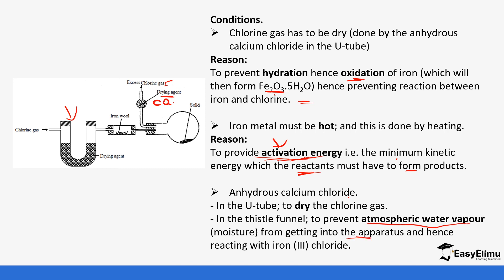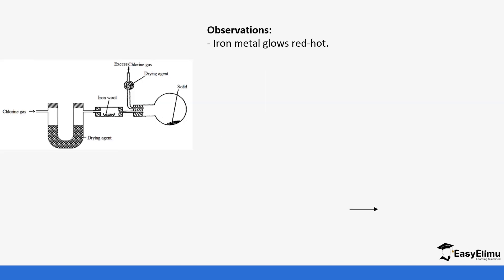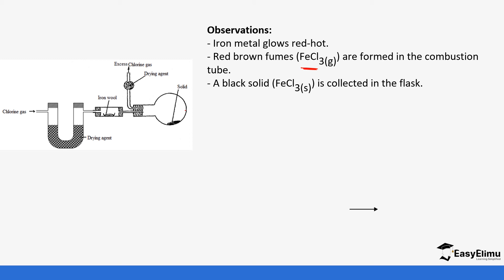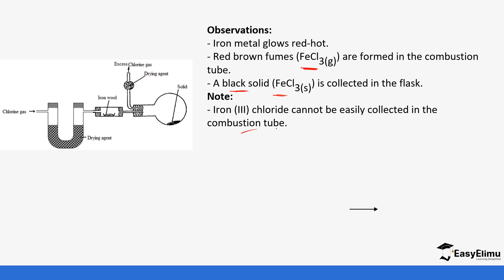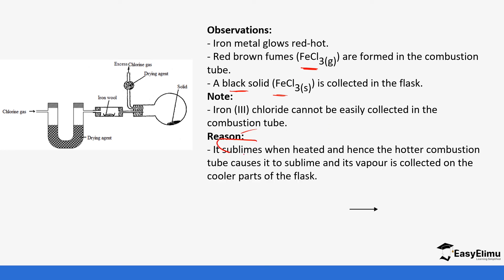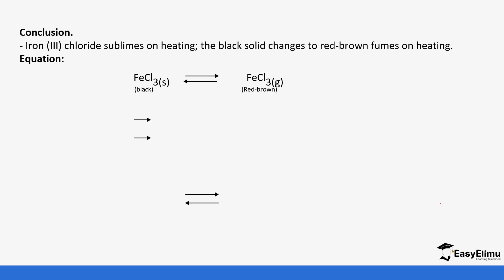Calcium oxide is used in the guard tube to prevent moisture from getting inside. The observations from this reaction are that the metal glows red hot, and red-brown fumes of iron chloride are formed in the combustion tube, which later cool down to form a dark solid of iron chloride. Iron chloride cannot be easily collected in the combustion tube because it sublimes — it deposits as a sublimate at the cooler parts of the flask. The equation is: iron reacts with chlorine to form iron(III) chloride.